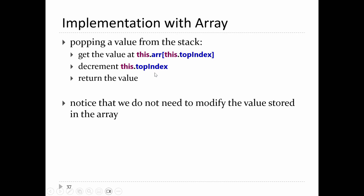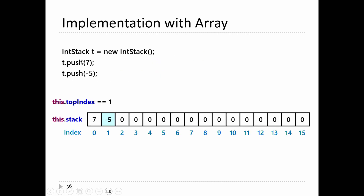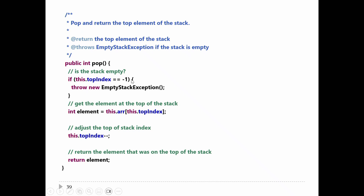To pop a value from the stack: get the value at the current top index, decrease top index by one, and return the saved value. For an array of primitive values you don't need to overwrite the old top value, since you're keeping track of where the top is anyway. In code: grab the element at the current top, decrement top index, return the element. Of course you can't pop an empty stack — if top index is minus one, throw an exception.